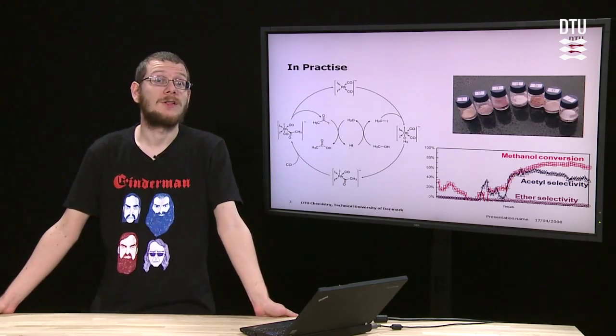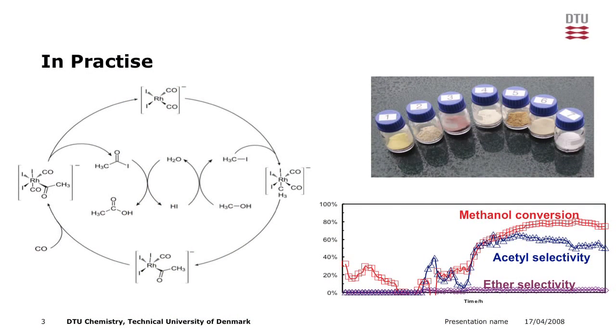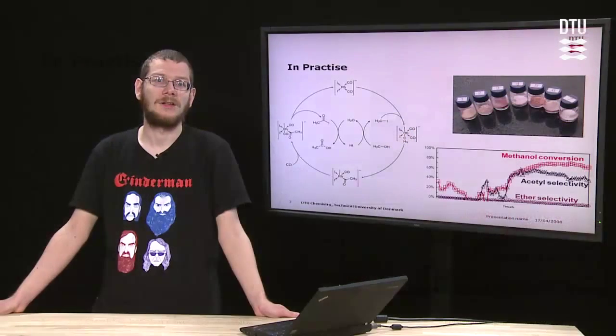So what we've been carrying out is the carbonylation of methanol to acetic acid. Now the reaction scheme for this, shown on the left, is fairly well established and it's been carried out for about 60 years. It's on a large scale, in industry, and it works.